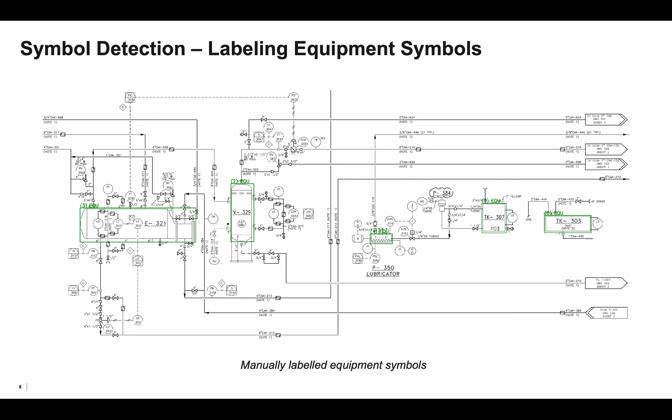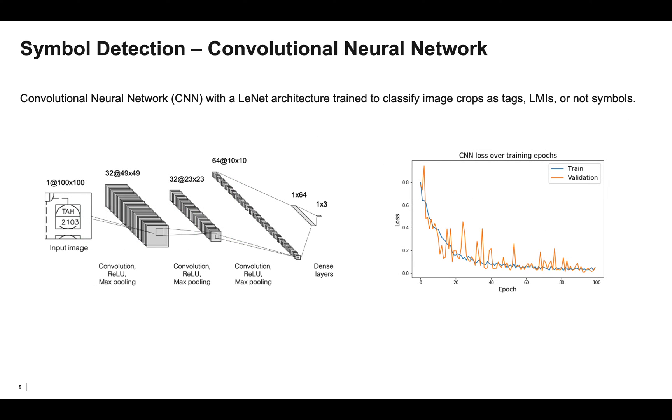Thanks, Michael, and hi everyone. My name is Shovik Mani. I'll start by explaining our symbol detection approach in depth. To detect symbols in the diagram, we trained a convolutional neural network with a LeNet architecture. Our network had three convolutional layers, followed by a fully connected dense layer, followed by a final softmax output layer. We trained this network to classify a 100 by 100 image crop as a tag, an LMI, or not a symbol.